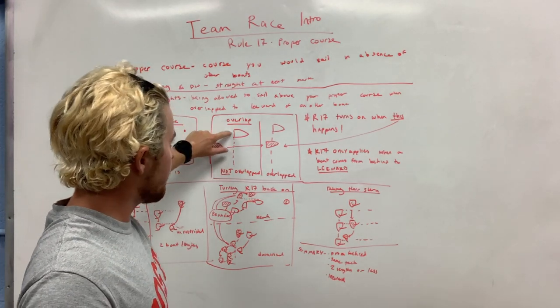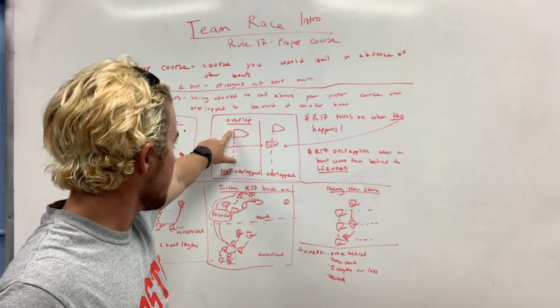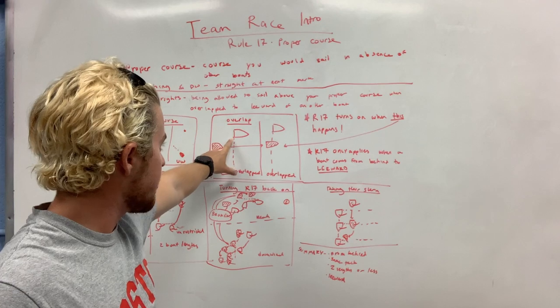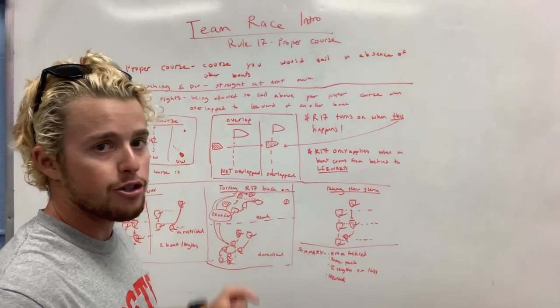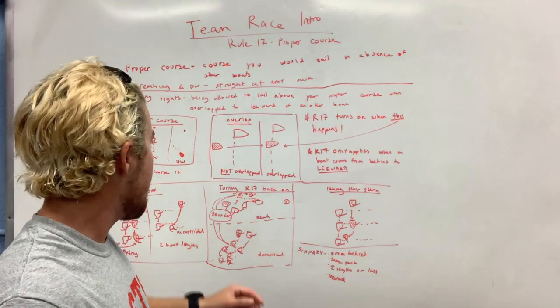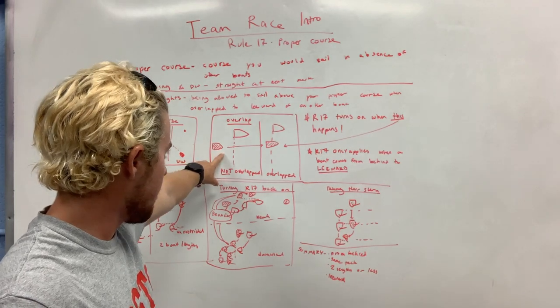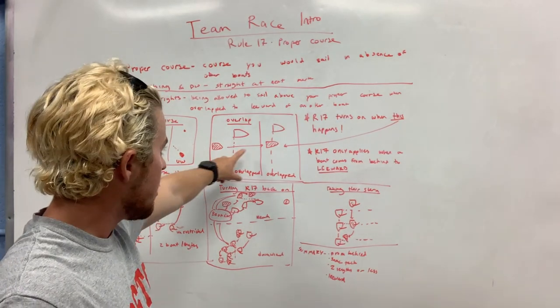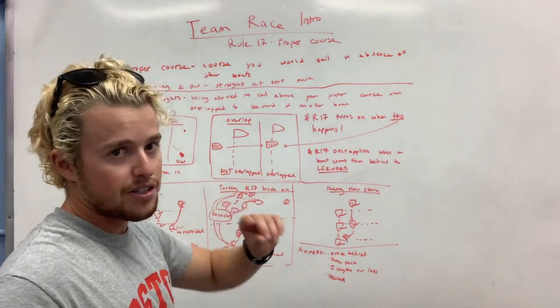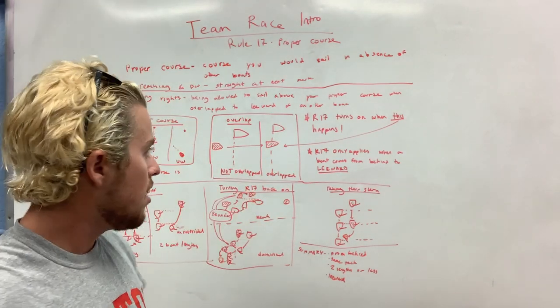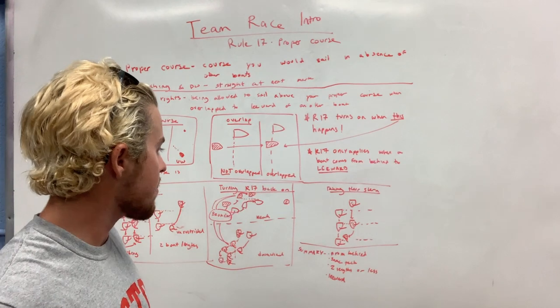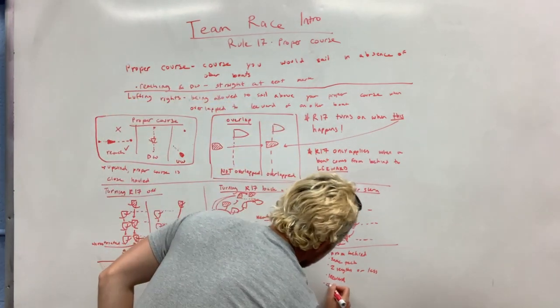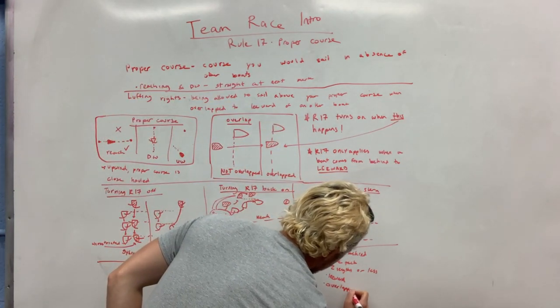So let's talk about overlap. We determine overlap by basically drawing a line through the transom and extending that two boat lengths. Just like the rule said. And if they are behind this line, then they are not overlapped. If they get in front of this line, even just a smidge of their bow, you are overlapped.